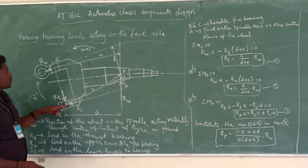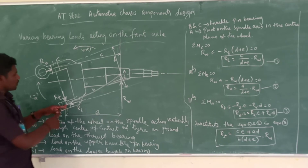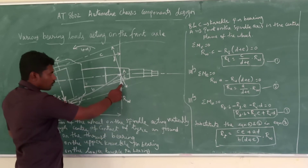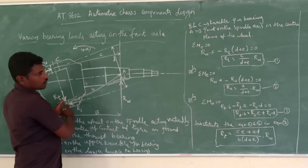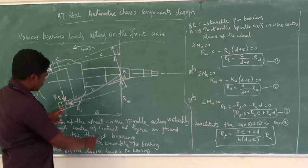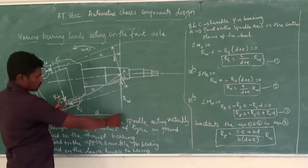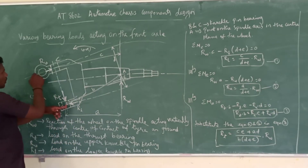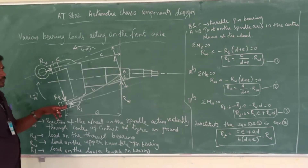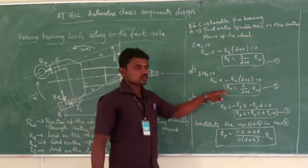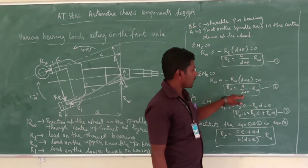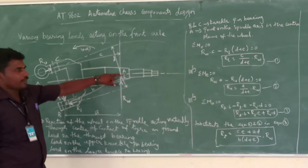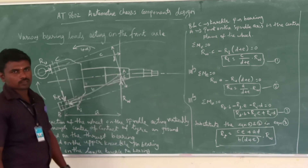Similarly, we take the moment about point B, the lower thrust bearing. Summation of moments equals zero. The reaction force due to the tire on the road, RW, acts at distance a from B. Solving: RU × (d + e) = RW × a, therefore RU = (a / (d + e)) × RW. This is equation number two.